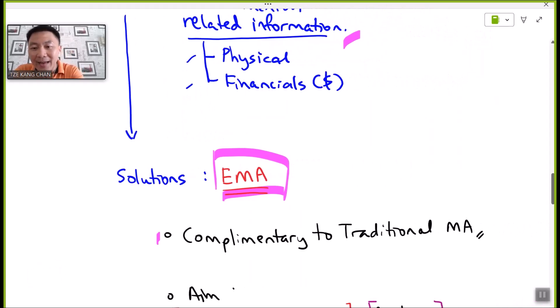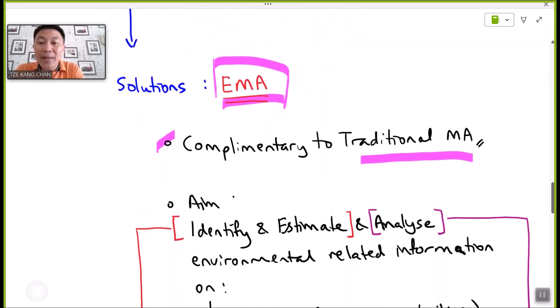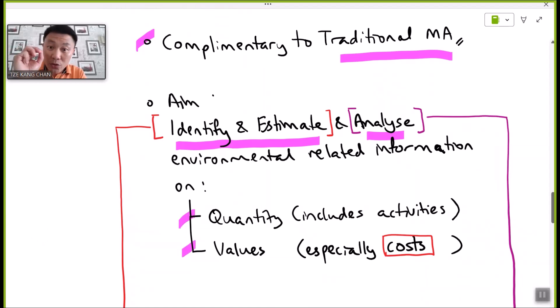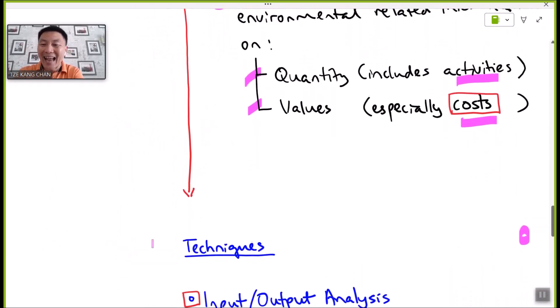The EMA is considered as a complement to the traditional management accounting system. Because the EMA is used mainly to pick up, identify and quantify or estimate the value of environmental related financial information, particularly costs. And finally, it is to help business organizations classify and analyze ranges of environmental cost information. This emphasis is placed onto the reporting of these two types of information: quantity, including activities, as well as financial value, in particular the cost arising relating to environmental related activities. Let's take a look at how we pick up this information by understanding three main techniques in the syllabus.